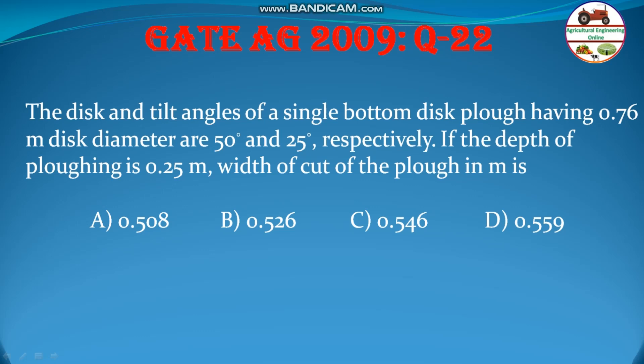Welcome to my channel. This is a problem from GATE 2009, question number 22, about the disc plough. The problem involves width formulation and power. A single bottom disc plough has a disc diameter of 0.76 meters, tilt angle of 25 degrees, and disc angle of 50 degrees. The depth of ploughing is 0.25 meters. The width of cut options are 0.508, 0.526, 0.546, and 0.559 meters.